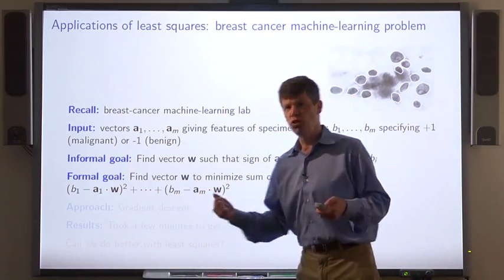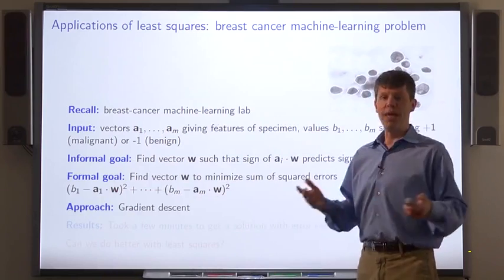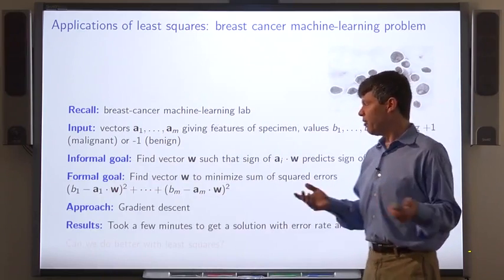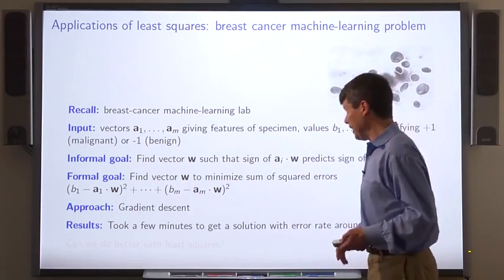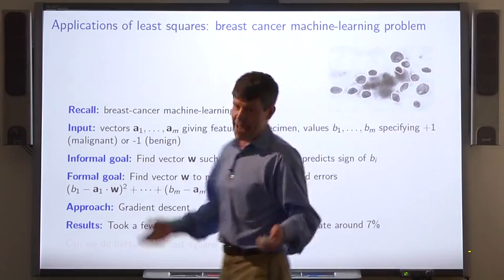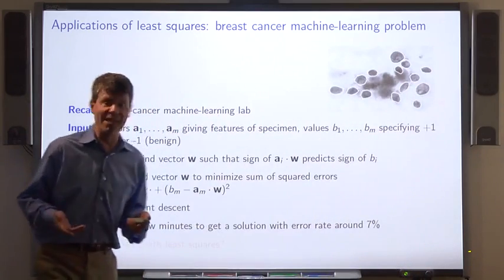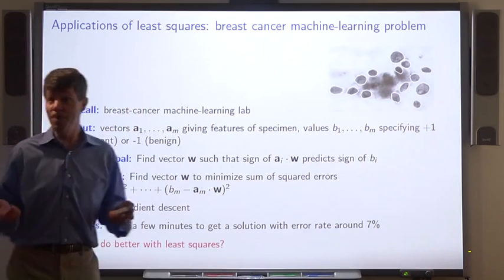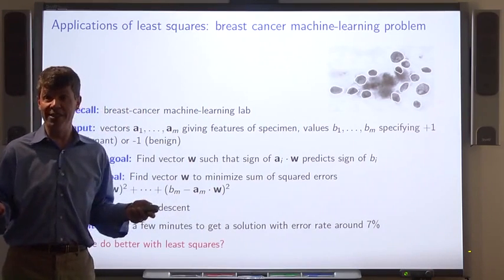And the approach we used in the lab was gradient descent. Now, I don't know about you. For me, that took a few minutes. And it actually came up with a error rate of 87, 8%. Can we do better with our least squares algorithm?